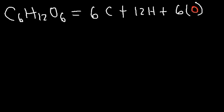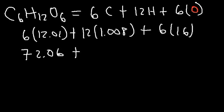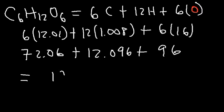So let's go ahead and replace every element with its respective atomic weight. The atomic weight for carbon is 12.01, but we need to multiply it by six since we have six carbon atoms. The atomic mass of hydrogen is 1.008, and we know the atomic mass for oxygen is 16. So 6 times 12.01 is 72.06, and 12 times 1.008 is 12.096, and 16 times 6 is 96. So let's add the three numbers.